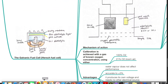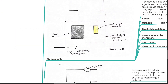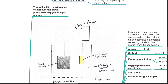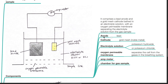The galvanic fuel cell, or Hertz fuel cell, is a device used to measure the partial pressure of oxygen in a gas sample. Components include an anode made of lead, a gold mesh cathode, and an electrolyte solution of either potassium hydroxide or potassium chloride. An oxygen-permeable membrane separates the cell from the gases in the breathing system, along with an ammeter and a chamber for gas sample.